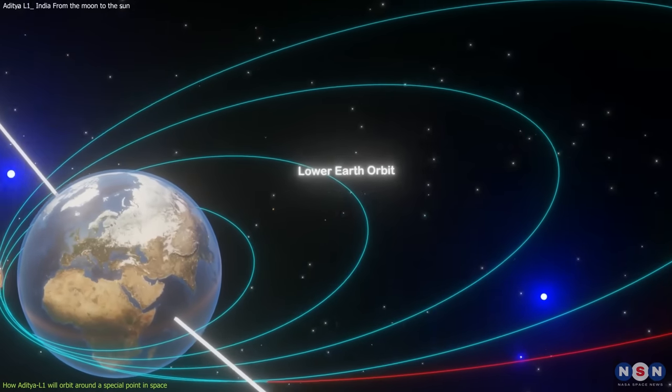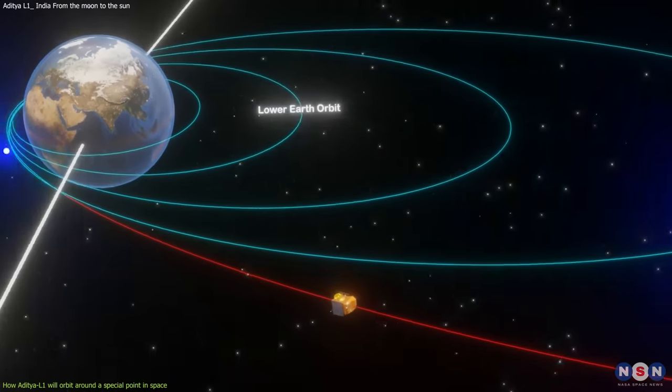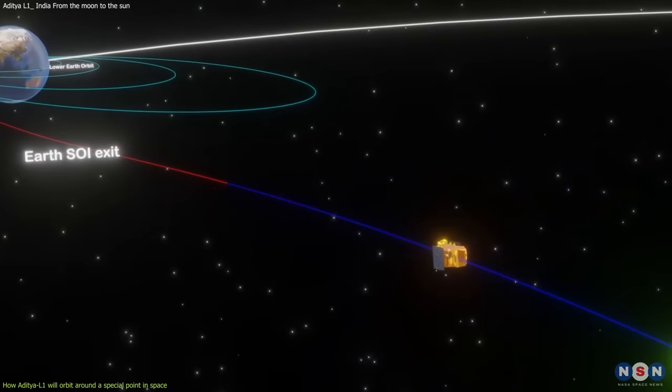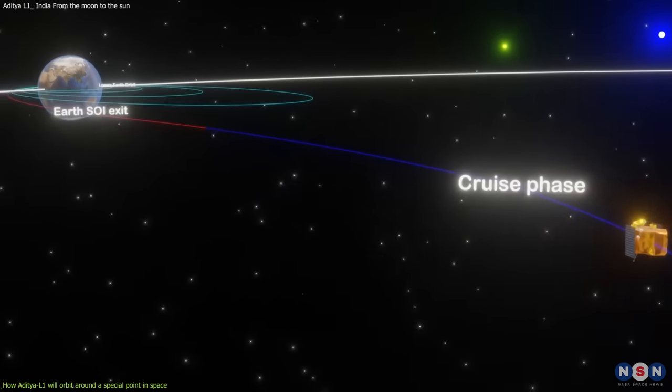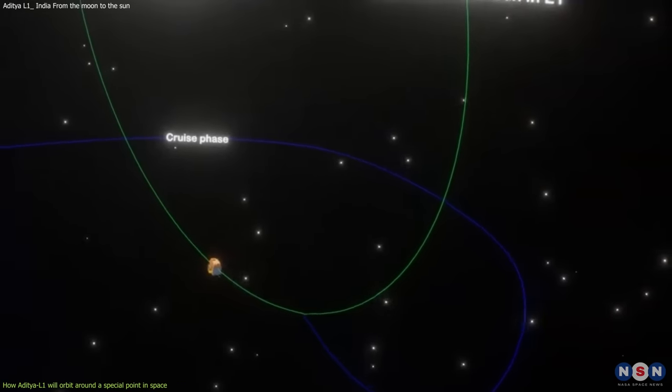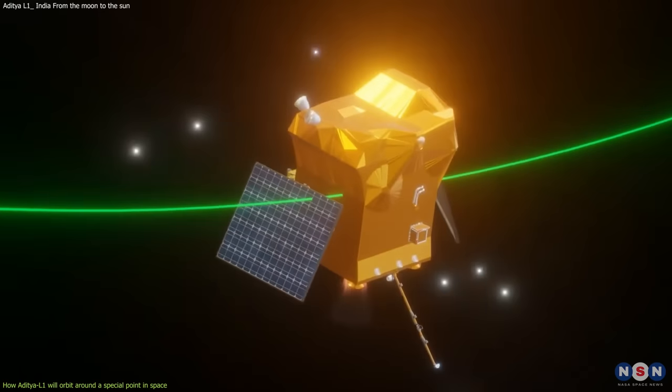From this orbit, Aditya L1 will use its own propulsion system to gradually raise its apogee until it reaches L1. This process takes about two months. Once at L1, Aditya L1 will not stay exactly at that point, but will move around it in a halo-shaped orbit.